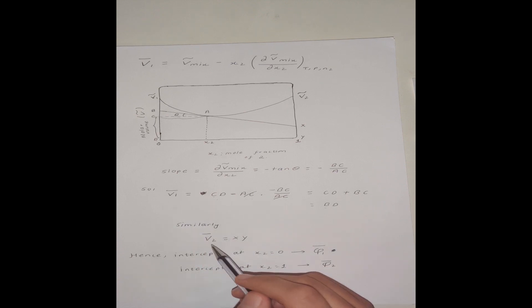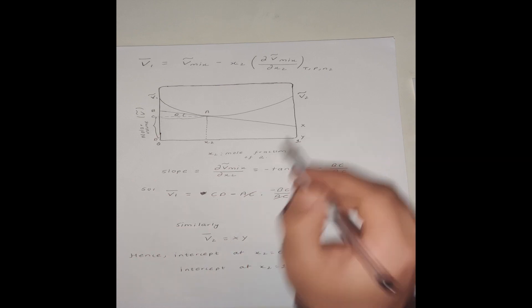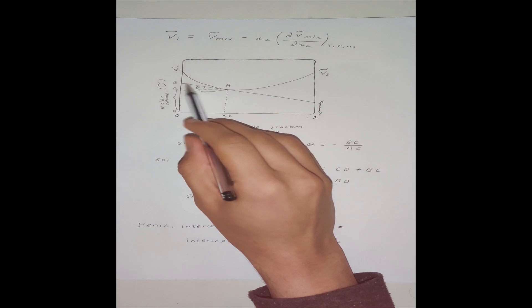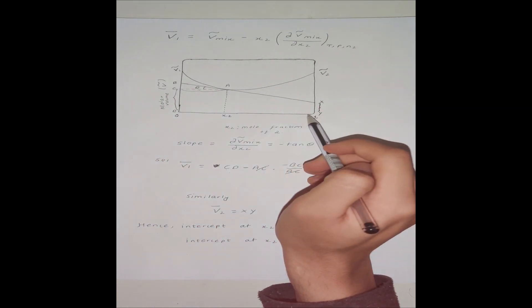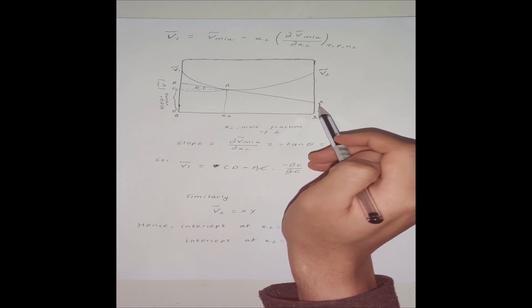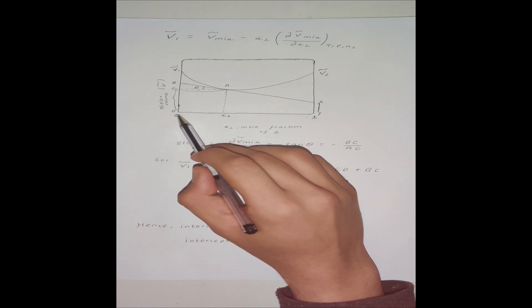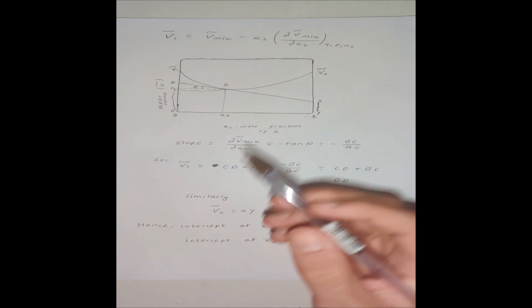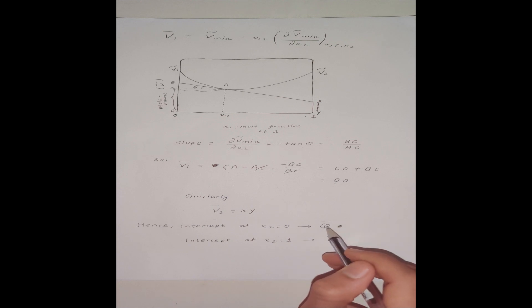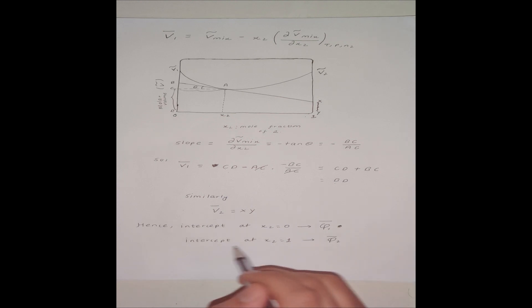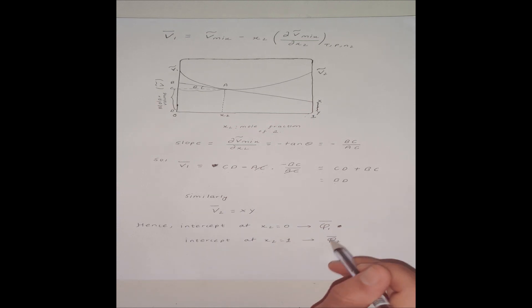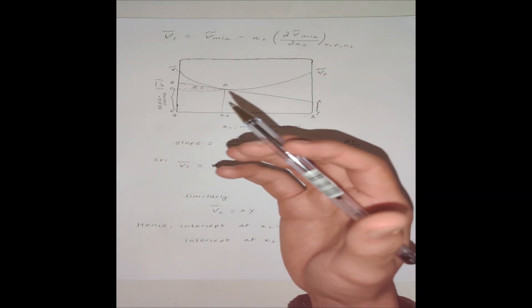Doing the same analysis for the partial molar volume of component 2, we find that the intercept the tangent makes with the vertical axis at x₂ = 1 gives the partial molar property of component 2, and the intercept this tangent makes at x₂ = 0 gives the partial molar property of component 1. This method holds not only for volume but also for other extensive properties.